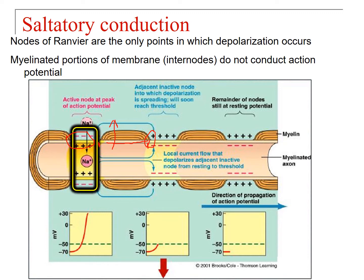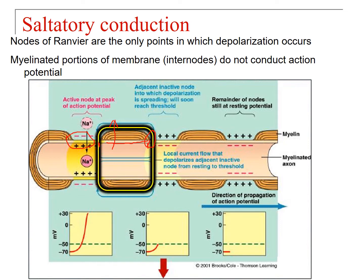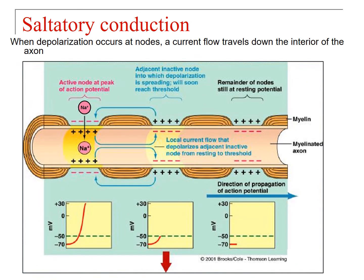Here's the node of Ranvier, and here are the internodes — 'internode' means between nodes, and this is the portion of membrane underneath the myelinating cell. When depolarization occurs at these nodes, you get a current flow traveling down the interior of the axon.